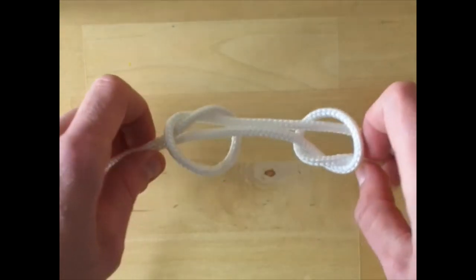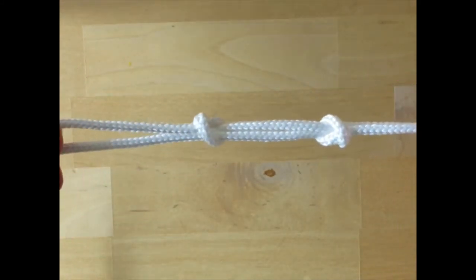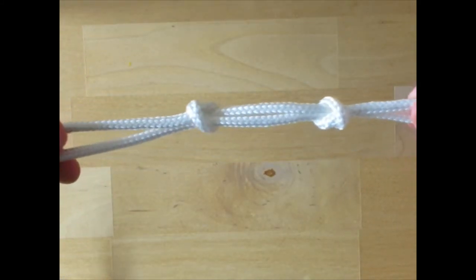Pull on all four ropes to first tighten the knots, then let go of the free ends and pull on the longer ropes to complete the knot.